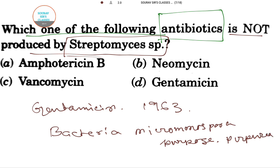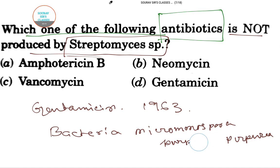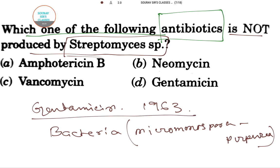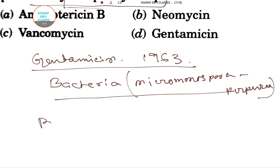This Micromonospora purpurea is more commonly used, and gentamicin is formed from this bacteria. Gentamicin is used to treat several types of bacterial infections and inflammation.